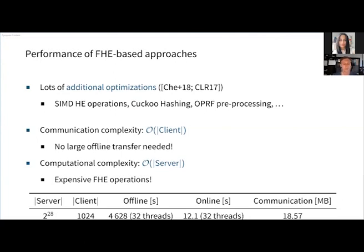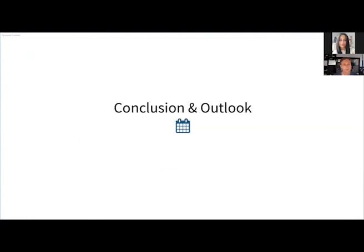As a comparison: with a server set size of 2^28 items and a client set of 1000 items, we have an offline phase that takes over an hour with 32 threads — though this is a one-time cost. The online cost is about 12 seconds with a 32-threaded implementation, so you spend over five CPU-core-minutes performing a single contact discovery process, with communication of about 18 megabytes. While this is very good in terms of communication, the latency of these protocols is not yet at practical levels.